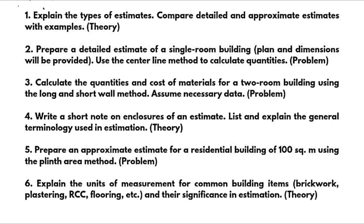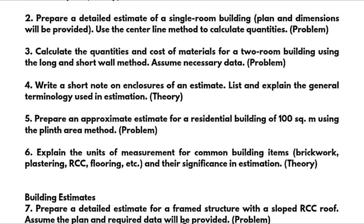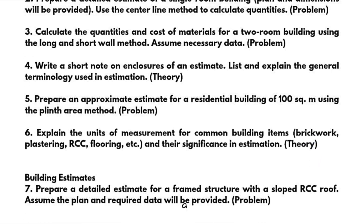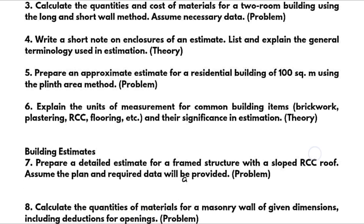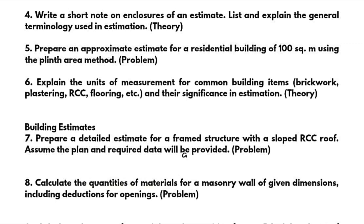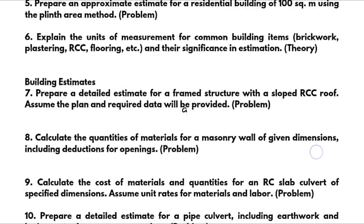A super important Module 1 question: calculate the quantities and cost of materials for a two-room building using the long and short wall method — necessary data will be given. Refer previous year papers to check the data. Also: write a short note on enclosures of an estimate and list general terminology used in estimation. For approximate estimates: prepare an approximate estimate for a residential building of 100 square meters using the plinth area method. Also explain units of measurement for common building items — brickwork, plastering, RCC, flooring — and their significance in estimation.